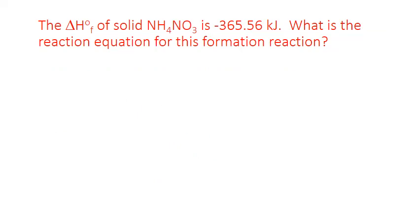Let's look at another example. This time we look up the enthalpy of formation of solid ammonium nitrate, NH4NO3, in Appendix G. We find that 365.56 kilojoules of heat are released whenever this compound is formed. We won't find the reaction equation for the formation of ammonium nitrate from its elements, so we do have to write that.